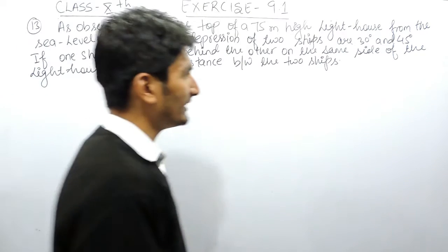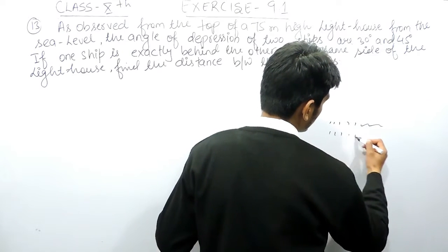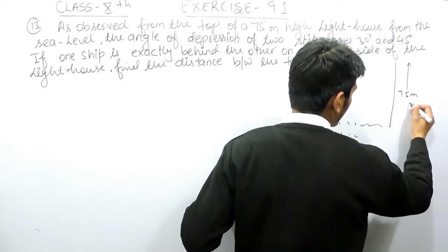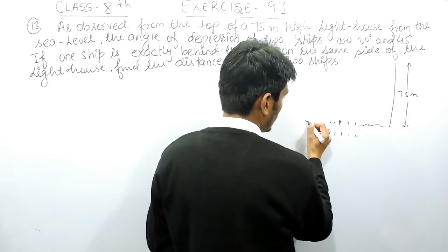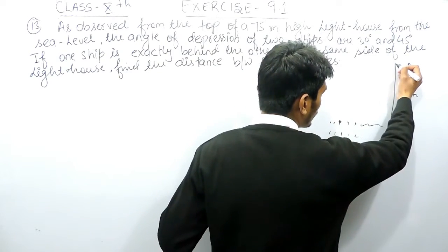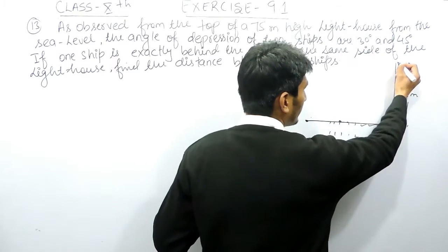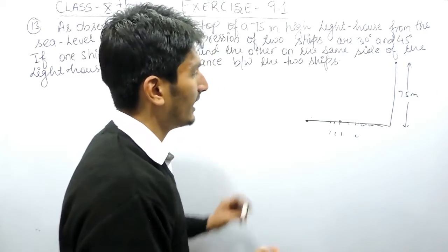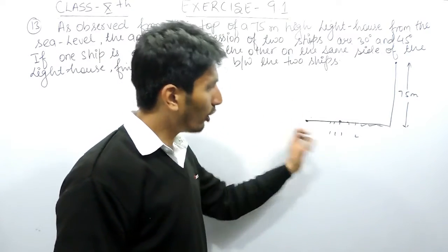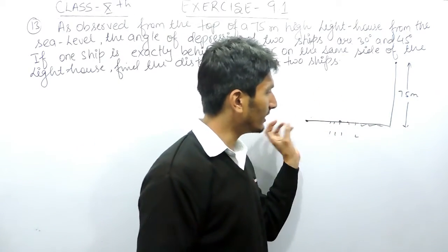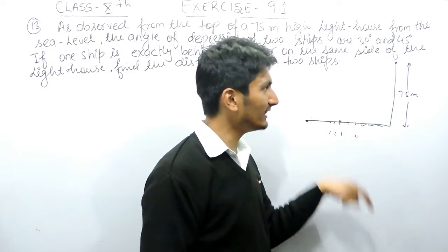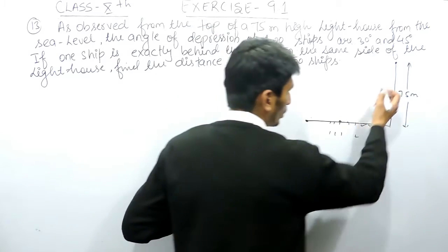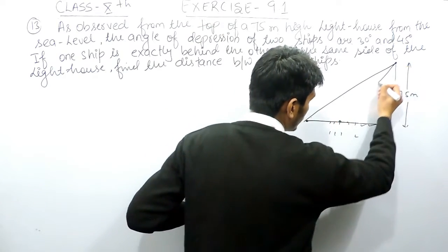In this question, it is given that from the top of a lighthouse — this is the sea and on the bank this is the lighthouse which is 75 meters high. There are two ships exactly one behind the other on the same side of the lighthouse. The angle of depression means if I see from the top of this lighthouse, the angles of depression are 30 degrees and 45 degrees. You don't need to form the figure according to the angle of depression but using the angle of elevation, because the angle of depression and the angle of elevation are the same. From here, this will be the first triangle and this will be the second triangle.